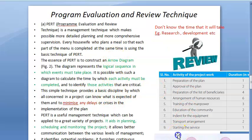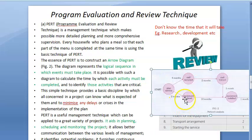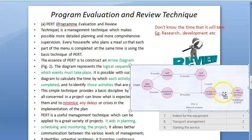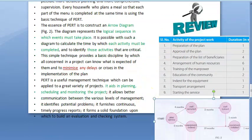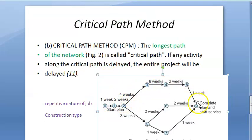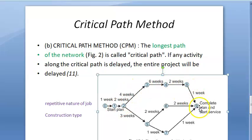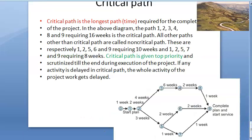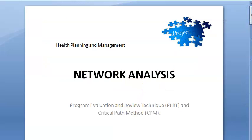In PERT, you use an arrow diagram, sequence the activities, and want to minimize delays — you can plan, schedule, and monitor the project. In CPM, similarly an arrow diagram is drawn, but whichever path is taking more time is focused on more. The path from start to end that takes the longest time is the critical path, and if it gets delayed, everything gets delayed.